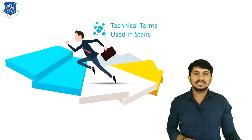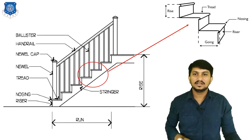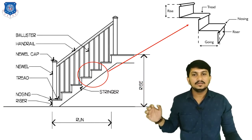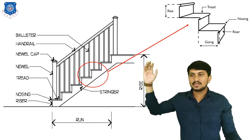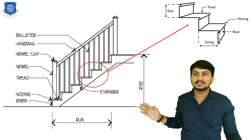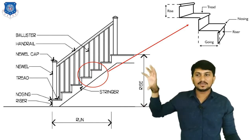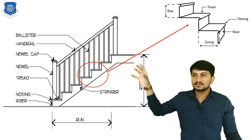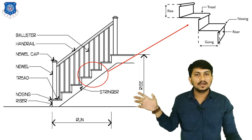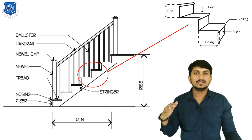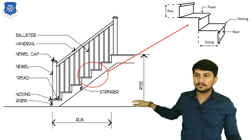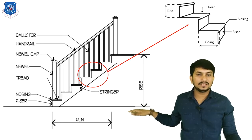Now let's discuss the technical terms used in stairs. Here is a figure showing the components of stairs. The inclined portion is called stairs. The horizontal distance is called RUN. The vertical distance or height of the stair is called RISE. A series of steps is called a flight, and the flight is called the unbroken series of steps. When a flight starts, the space provided at the bottom floor is called LANDING.